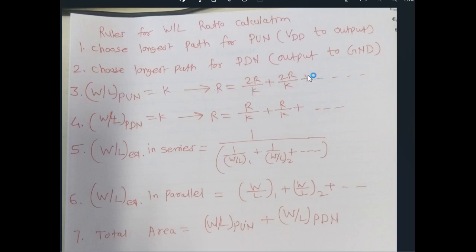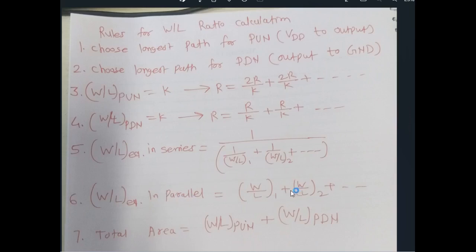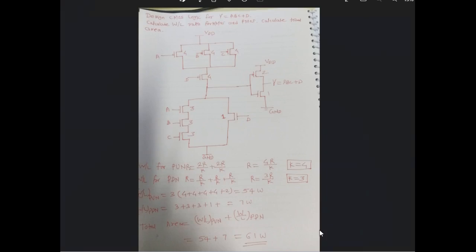For the W by L calculation for PMOS, the formula is R equals 2R/K plus 2R/K plus 2R/K, and so on, depending on the number of MOSFETs. For the pull-down network, it is R/K plus R/K plus R/K, and so on. For MOSFETs connected in series, the equivalent W by L is: 1 divided by the sum of (1/(W/L) of each MOSFET). For MOSFETs connected in parallel, the equivalent is simply the sum of the individual W by L ratios. Total area on the chip equals W/L of the pull-up network plus W/L of the pull-down network.